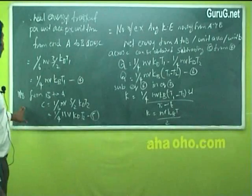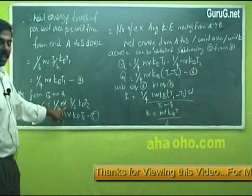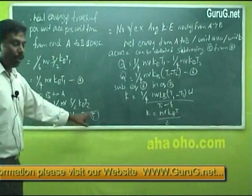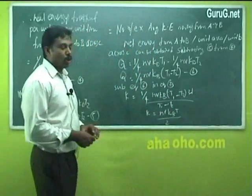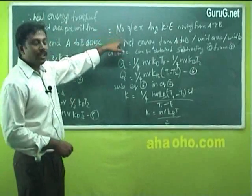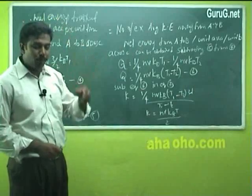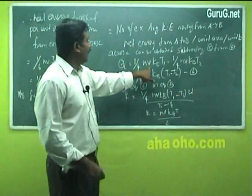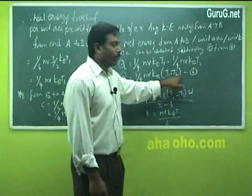The net amount of energy transferred from B to A across C is given by (1/6)NV·(3/2)KB·T2, which simplifies to (1/4)NV·KB·T2 — put this as equation 5. The net amount of energy transferred from A to B per unit area per unit time across C is obtained by subtracting equation 5 from 4. On subtracting, Q = (1/4)NV·KB·T1 minus (1/4)NV·KB·T2, which gives Q = (1/4)NV·KB·(T1 - T2) — put this as equation 6.